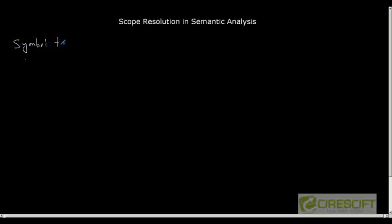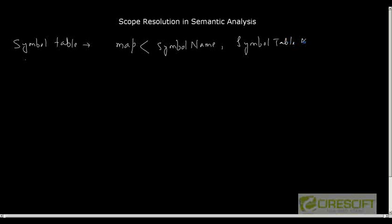Today we will discuss scope resolution in semantic analysis. For doing that, we use a data structure called a symbol table. A symbol table is essentially a map — you can represent it as a hash table or a std::map — and it contains the information of a given declaration. That information is called a symbol table entry node. The key in this map is the symbol name and the value is the symbol table entry node.